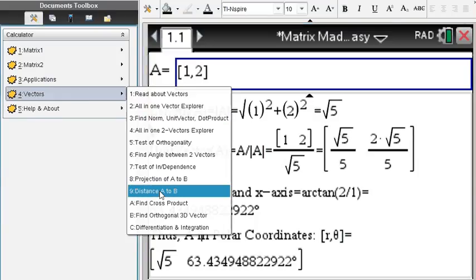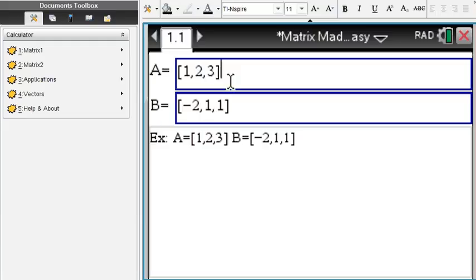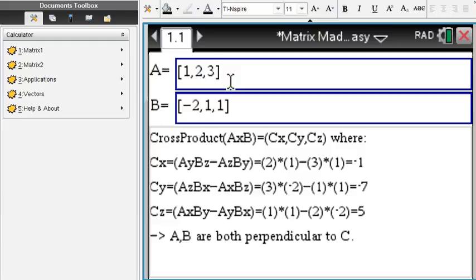You can do cross product. Okay, let's do it, 1 2 3 and negative 2 1 1, and you do everything step by step and you will get negative 1, negative 7, and 5 as a three-dimensional vector that is both perpendicular to A and B.